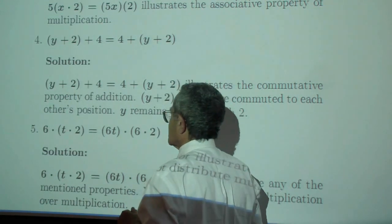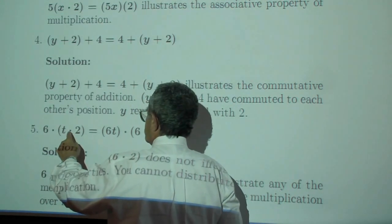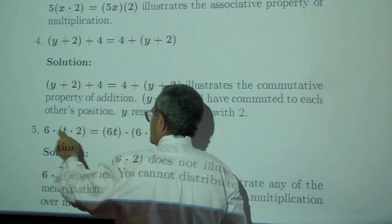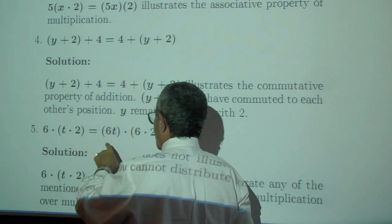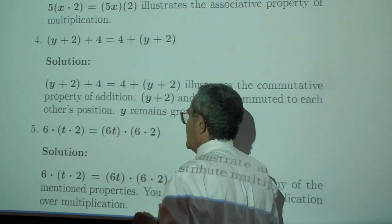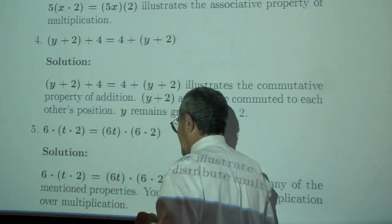In five, we reproduced the dot, then we drew an arrow here and we drew an arrow here. And this is not correct. We cannot distribute multiplication over multiplication.